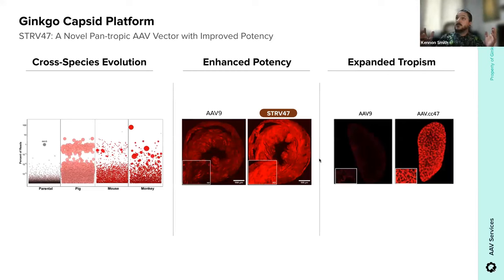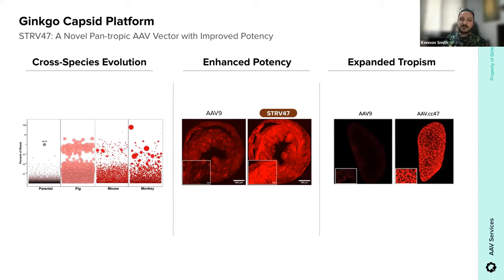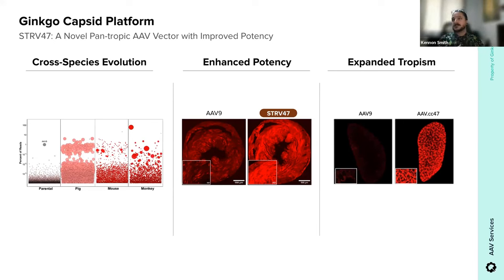Next I want to jump to Strive-47, highlighting it as a pantropic capsid and hitting on some of the kidney data shared at ASGCT last year. The three aspects I'm going to highlight are: first, the cross-species evolution process we go through; second, the enhanced potency where Strive-47 really excels; and third, the expanded tropism of the capsid itself — filling a void that used to exist for the kidney in regards to AAV capsid tropism. There's actually a lot more data coming out on this capsid at ASGCT this year, with more information on its proximal tubule targeting characteristics.